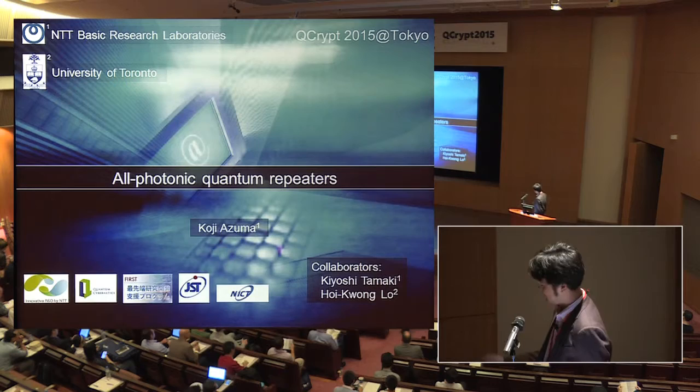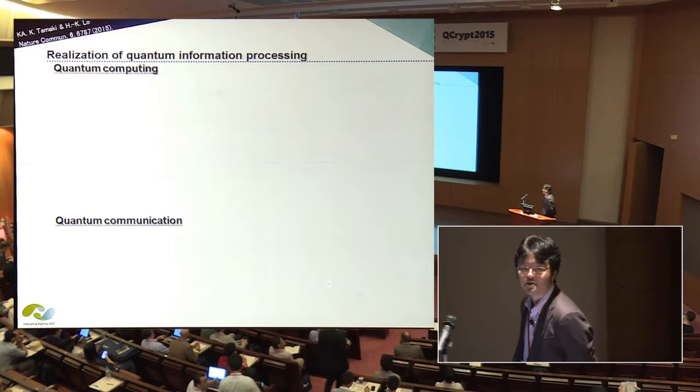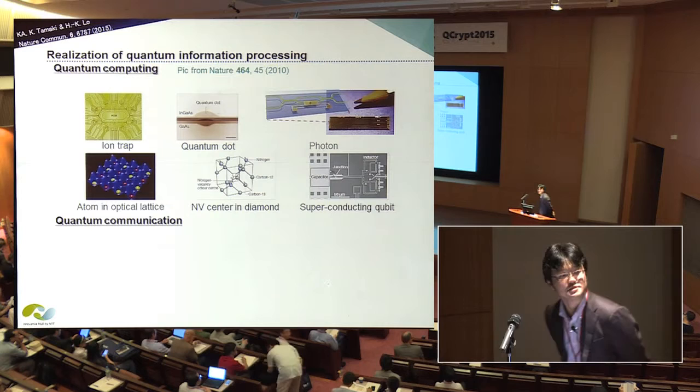One of the big issues in quantum information science is how to realize quantum information processing. Quantum information processing is composed of two big applications: one is quantum computation, the other is quantum communication.